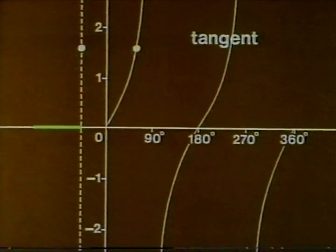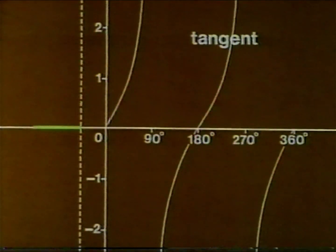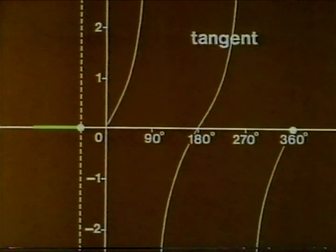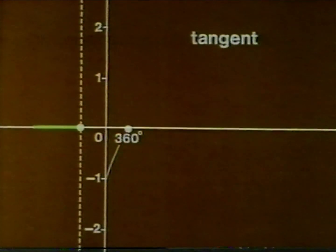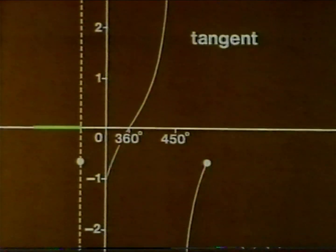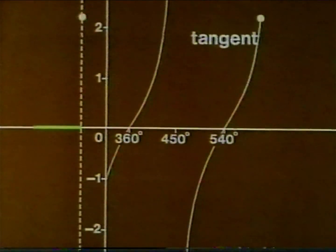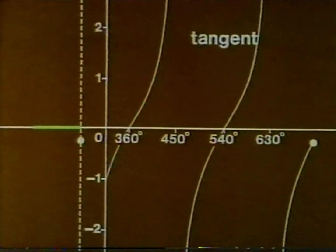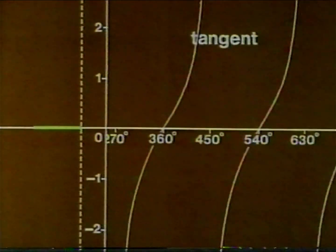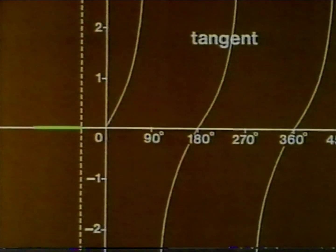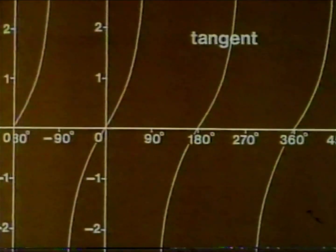The point tracing the graph keeps at the same height as the point on the line. The graph continues to the right and repeats itself every 180 degrees. It also continues to the left for negative angles.